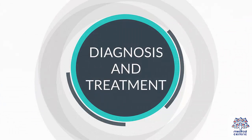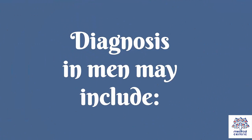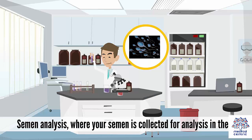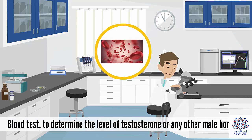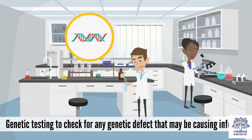Diagnosis and treatment: Diagnosis in men may include semen analysis, where semen is collected and analyzed in a lab; a blood test to determine the level of testosterone or other male hormones; and genetic testing to check for any genetic defect that may be causing infertility.